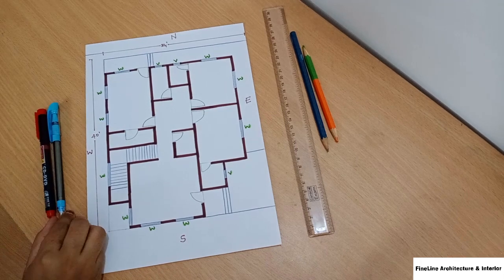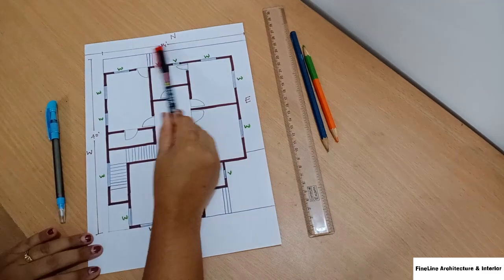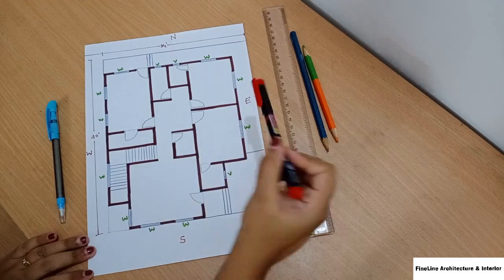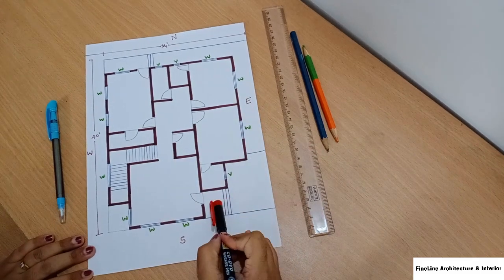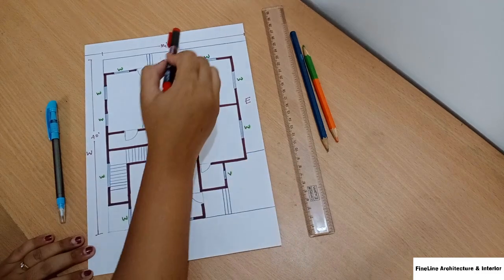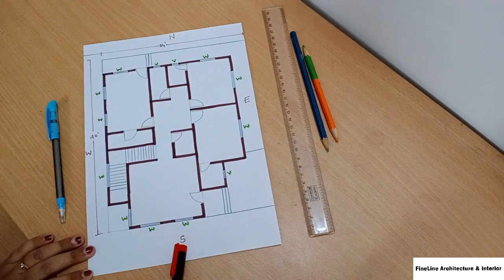Today's plot size is 34 feet by 40 feet. This is east facing, so our entrance is east. This is east, west, north and south.